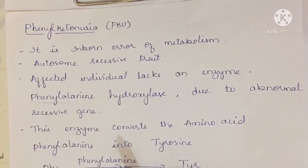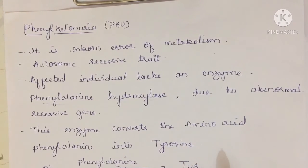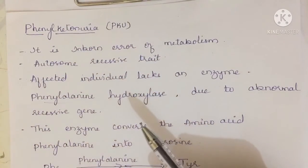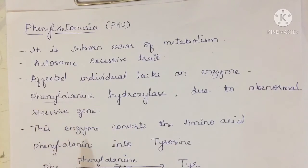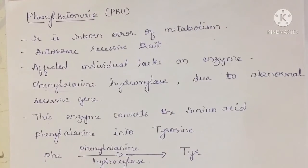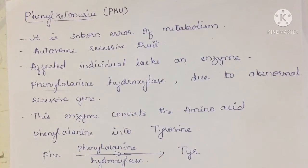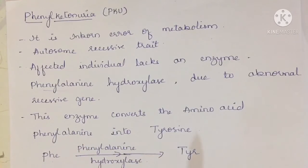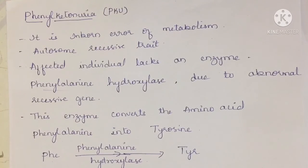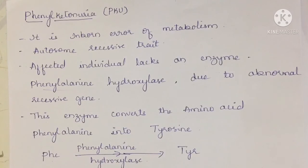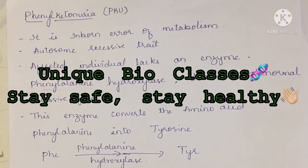Related to phenylketonuria, I have discussed it in another video as well, and if possible I will share that link in the description box. If you have any doubts or queries, please comment in the comment box. Phenylketonuria can be asked for one mark, two marks, or three marks — for example, they can ask: name the enzyme which is lacking in phenylketonuria. In my next video, I shall discuss thalassemia. Stay safe, stay healthy.